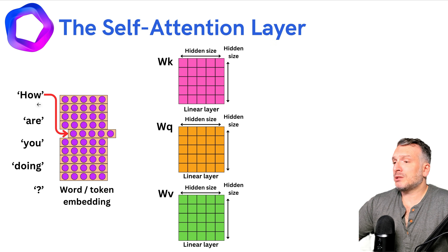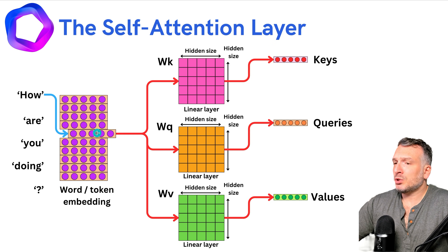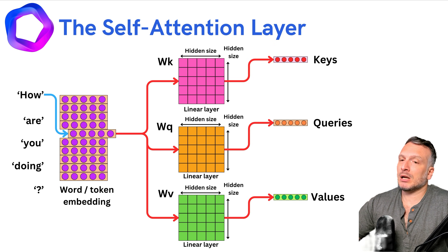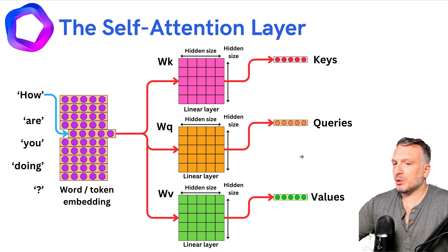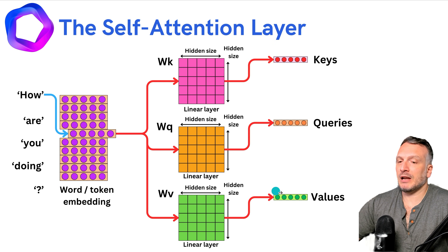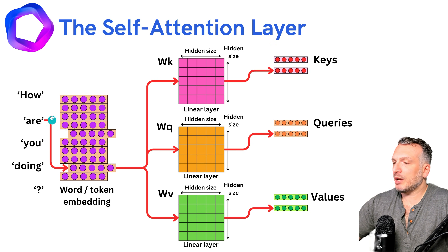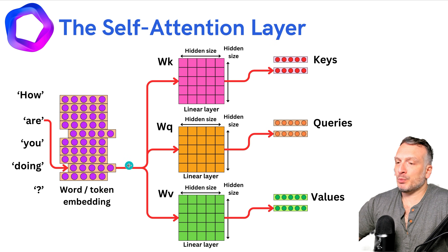Let's take the first token in the input sequence and get its related vector representation in the token embedding. This vector is going to go through the three different linear layers and generate three different vectors. The vectors coming out of WK are called the keys, the vectors coming out of WQ are called the queries, and the vectors coming out of WV are called the values. Now let's look at the second word in the input sequence — the word R — which will have its vector representation passed through the three linear layers to get a set of keys, queries, and values.